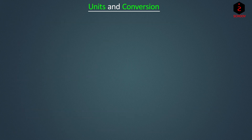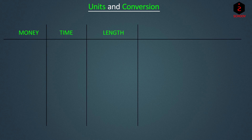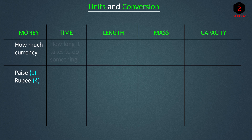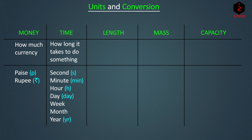Now, let's have a look at units of money, time, length, mass and capacity. Money describes how much currency. Units of money are paise and rupee. Time describes how long it takes to do something. Units of time are second, minute, hour, day, week, month and year.